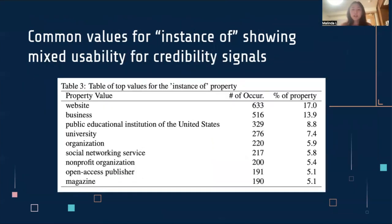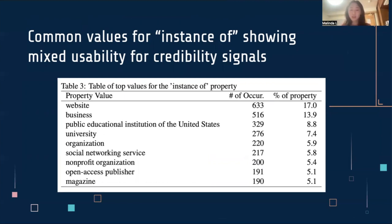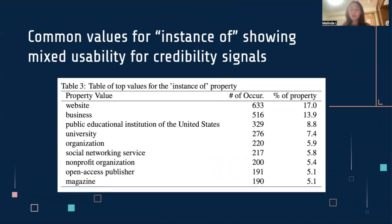If we look at the top values for the property 'instance of,' we also see that a variety of domain organization types exist. However, some categories are actually more useful than others. For example, being an instance of website, business, or organization doesn't really tell us much about the nature of the domain. But being an instance of a public educational institution, open access publisher, or magazine may potentially indicate something about the domain's credibility.